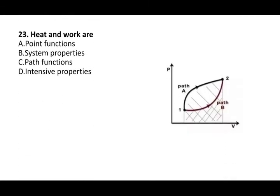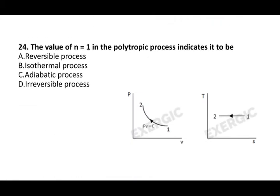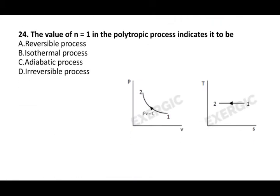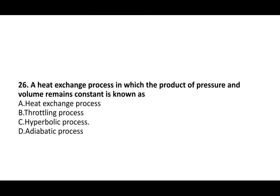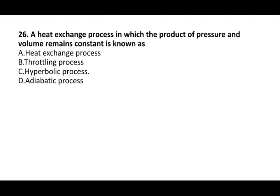Next question: heat and work are path functions. Next question: the value of n equal to 1 in the polytropic process indicates an isothermal process where temperature is constant. Next question: the term NTP stands for normal temperature and pressure. A heat exchange process in which the product of pressure and volume remains constant is known as a hyperbolic process.